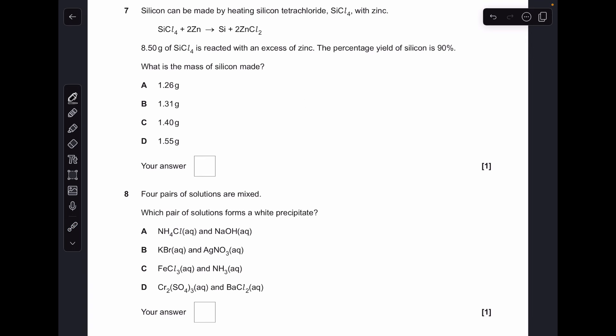Question seven we need to calculate the moles of silicon tetrachloride from the mass so dividing that by the MR we get 0.04997 moles. Given that it's a one to one ratio would produce the same number of moles but it's only a 90% yield so we're going to multiply that by 0.9. Then we're going to multiply that by the MR of silicon to get the mass and it comes out at 1.26, so B was the answer.